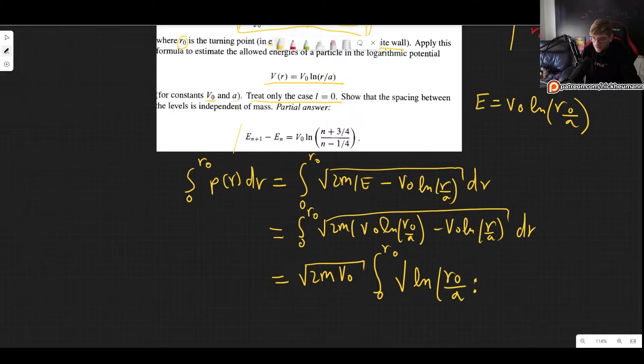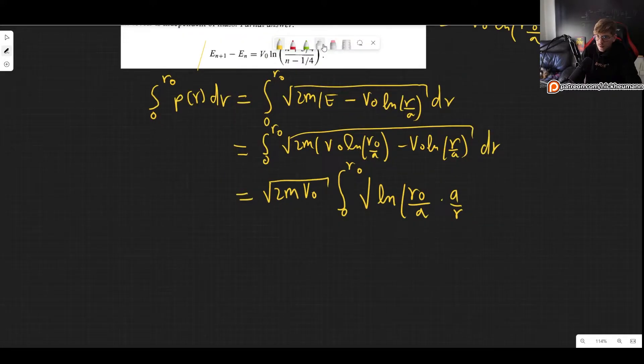And we can also factor out a few things so we can factor out 2m V0. Then we have the integral and now we have square root of the natural log of R0 divided by A divided by R over A which is of course the same as multiplying by A over R. So the A's cancel out and we are left with R0 over R.